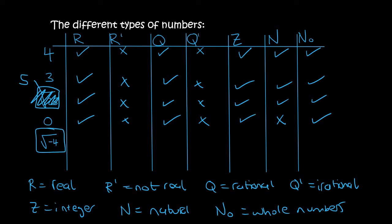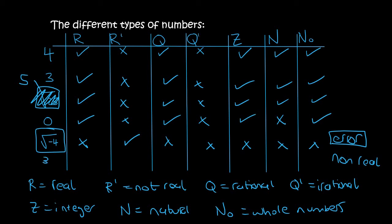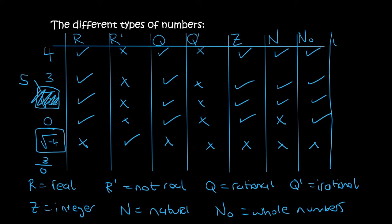If you type the square root of a negative number on your calculator you're going to get an error. There are two different kinds of errors. When it's because of a square root then we call that non-real or not real. So it can't be any of the other categories. I should have added another column — called undefined. When you have an error due to a 0 underneath, that's called undefined and it can't be any of the others either.